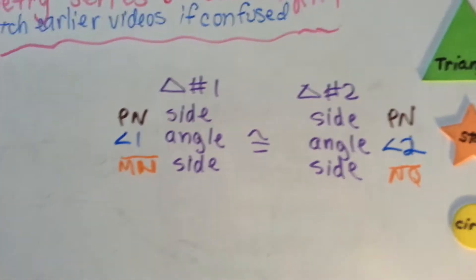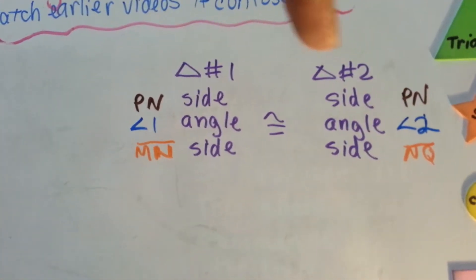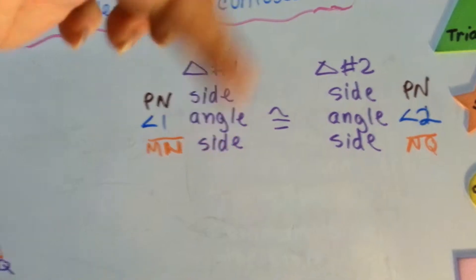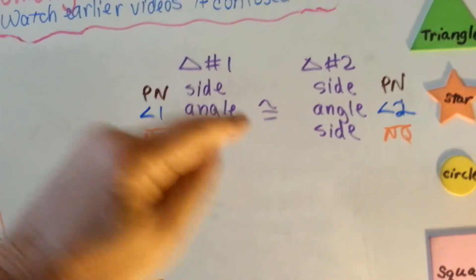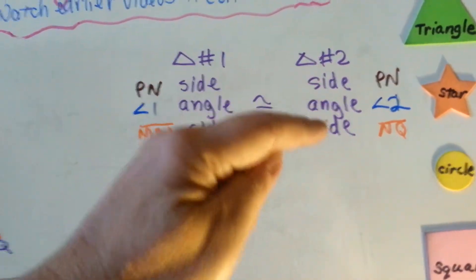If two sides of the included angle of one triangle are congruent equal to two sides and the included angle of a second triangle, then the triangles are congruent. So it's basically this: triangle one, triangle two. Side angle side. That's what it's called. SAS, side angle side.